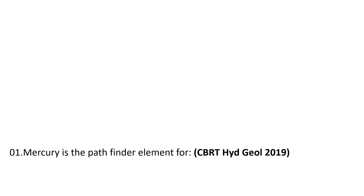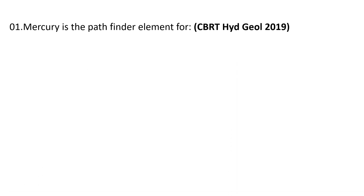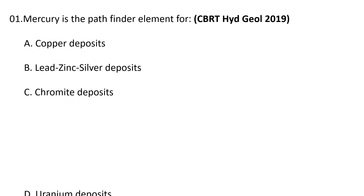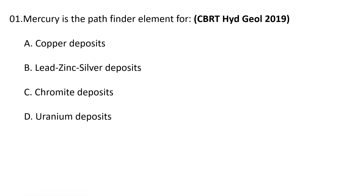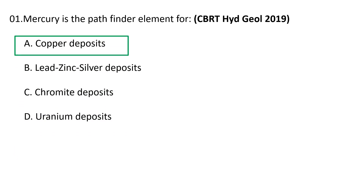First question. Mercury is the pathfinder element for: A. Copper Deposits, B. Lead-Zinc-Silver Deposits, C. Chromite Deposits, and D. Uranium Deposits. The correct answer is A — Copper Deposits.